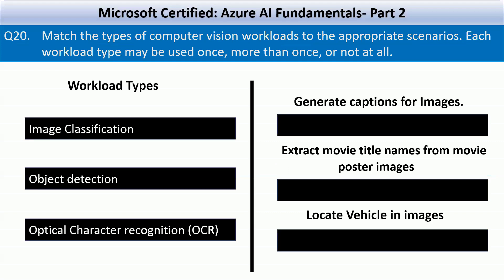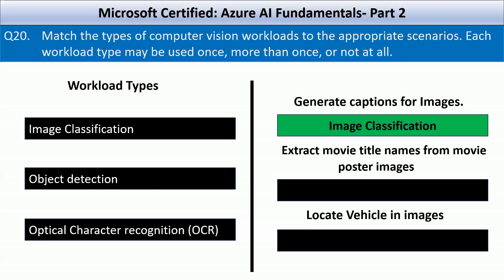Match the type of computer vision workloads to the appropriate scenarios. Each workload type may be used once, more than once, or not at all. The three workload types are image classification, object detection, and optical character recognition. The first workload — generating captions for images — uses image classification, which helps identify the main subject of an image.